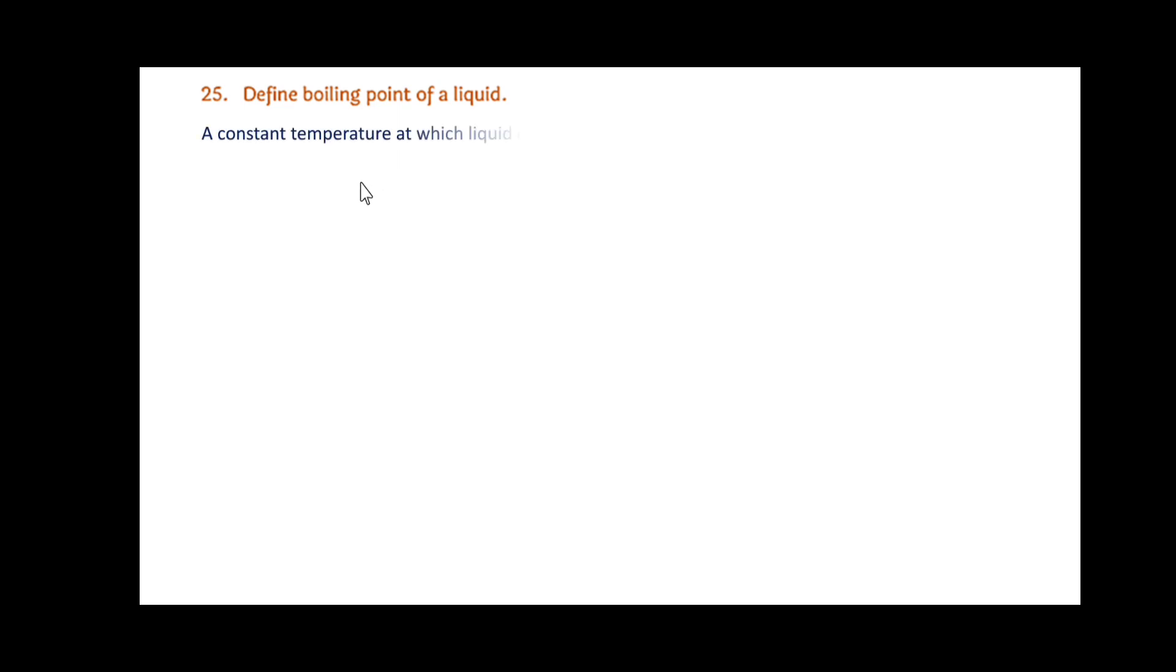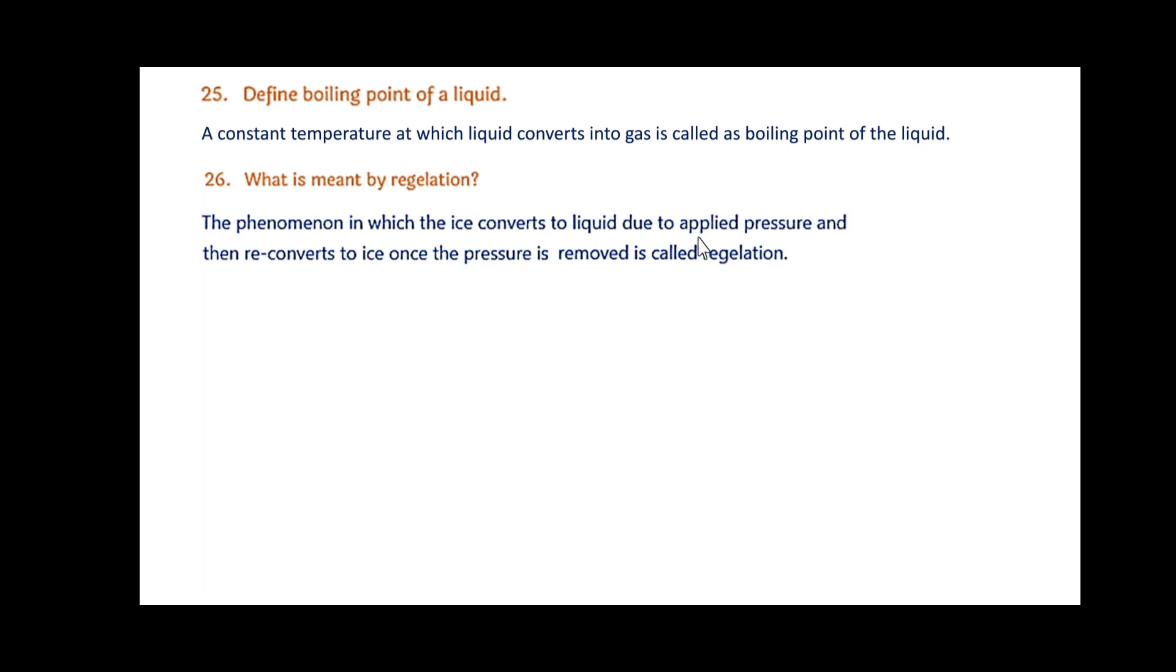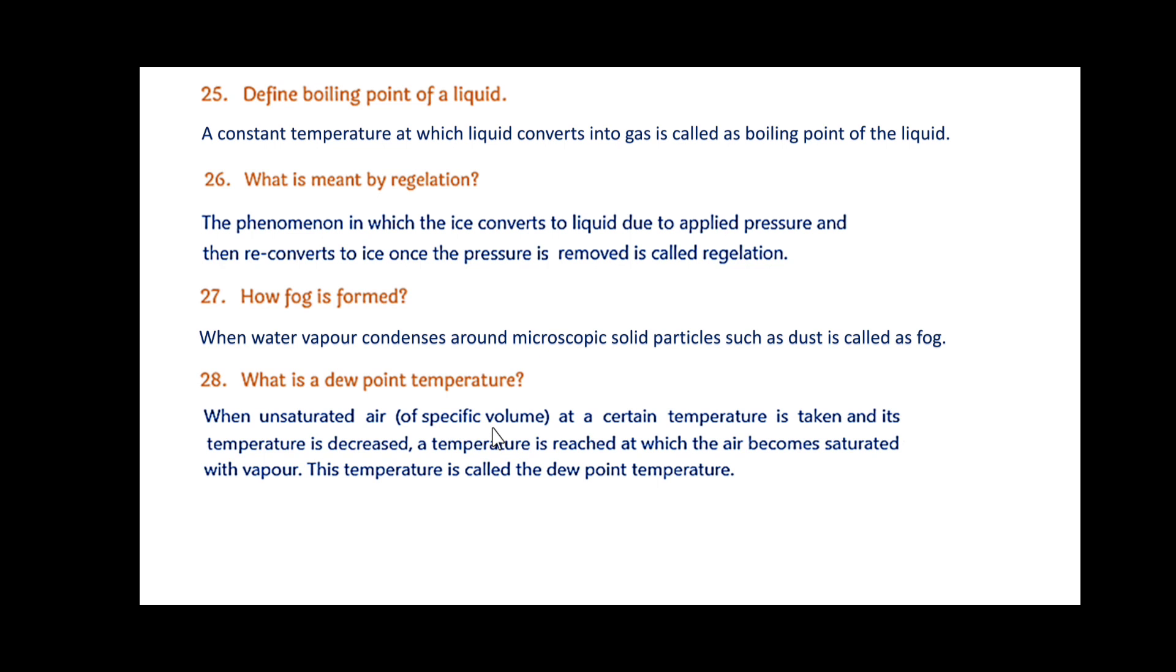Define boiling point of the liquid. A constant temperature at which liquid converts into gas is called the boiling point of the liquid. What is meant by regelation? The phenomenon in which ice converts to liquid due to applied pressure and then reconverts to ice once the pressure is removed is called regelation. How is fog formed? When water vapor condenses around microscopic solid particles such as dust, it is called fog. What is dew point temperature? When unsaturated air of specific volume at a certain temperature is taken and its temperature is decreased, a temperature is reached at which the air becomes saturated with vapor. This temperature is called the dew point temperature. What does the existence of drops of water on the leaves of a tree in the morning indicate? It indicates that air is saturated with vapor.